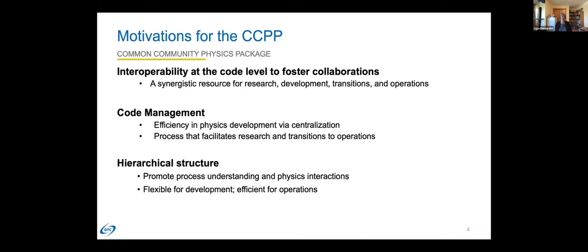Another motivation is hierarchical structures. We would like the CCPP to promote process understanding in physics interactions — being able to run just one single scheme or multiple schemes, change the order of the schemes, change how schemes are grouped when executing a simulation so that hierarchical studies can be conducted. But we also need the CCPP to be very efficient and run fast for operations.